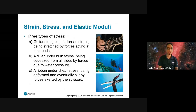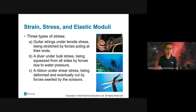That's about equilibrium and center of gravity. We also need to know what is stress, strain, and elastic moduli. There are three types of stress: a guitar string under tensile stress, a diver under bulk stress due to water pressure, and a ribbon under shear stress — the ribbon is deformed and eventually cut by the force exerted by scissors.